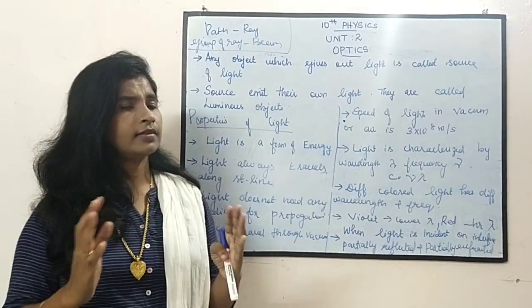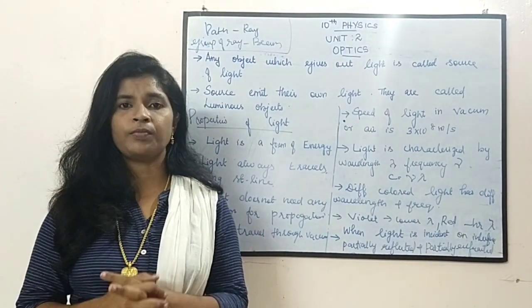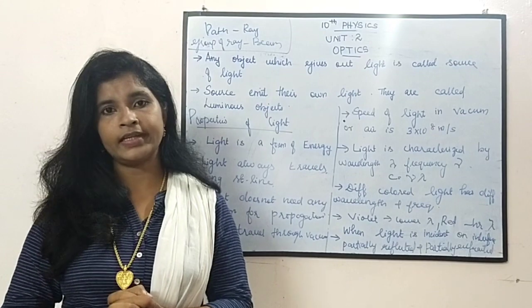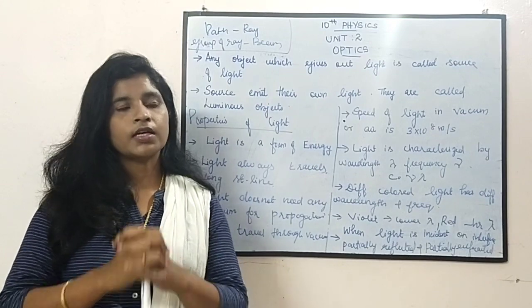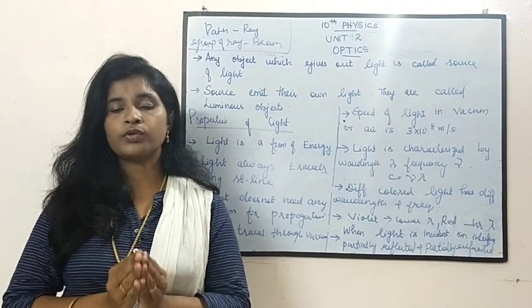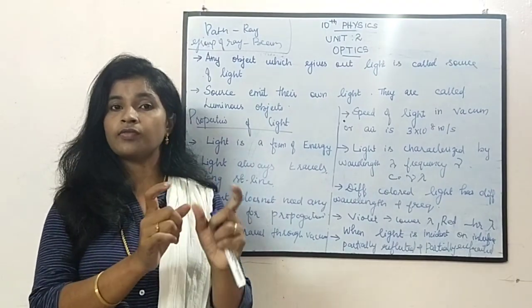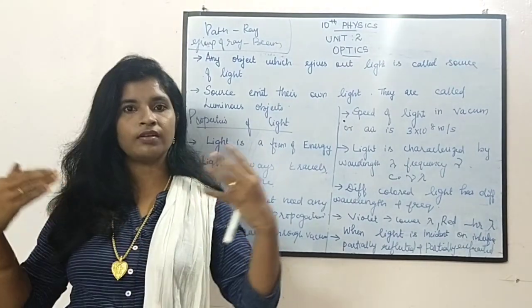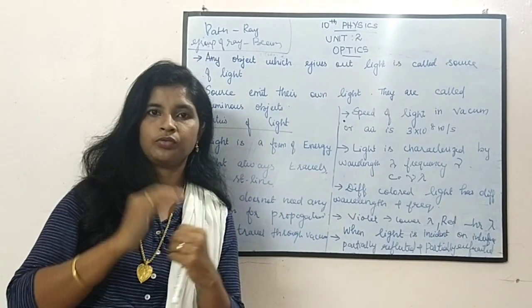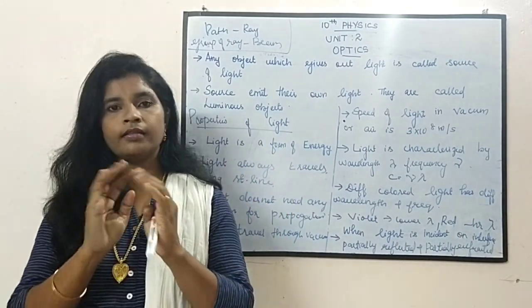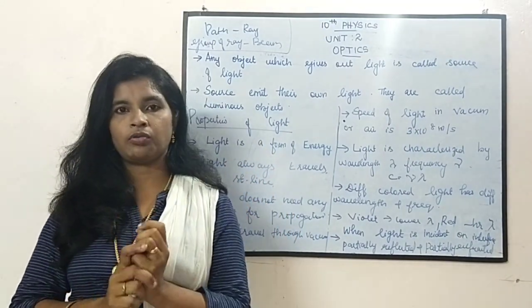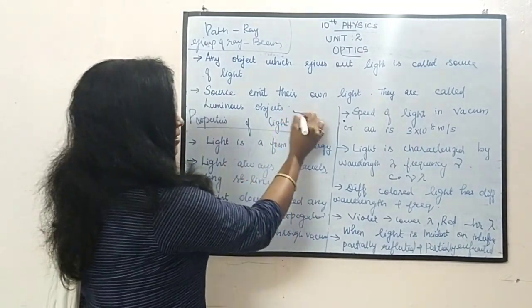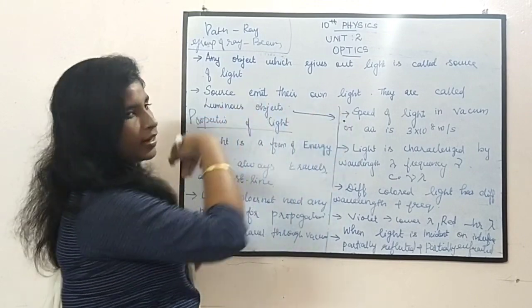So many theories have been proposed by so many scientists. First, they proposed that light is the form of ray. They found out and told that light is in the form of a ray.